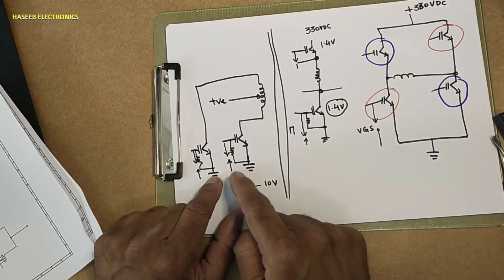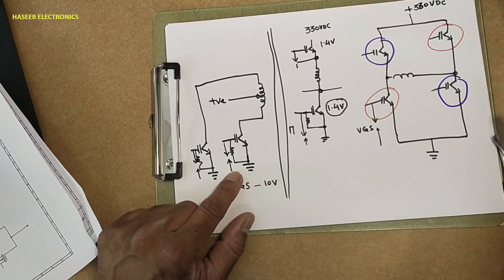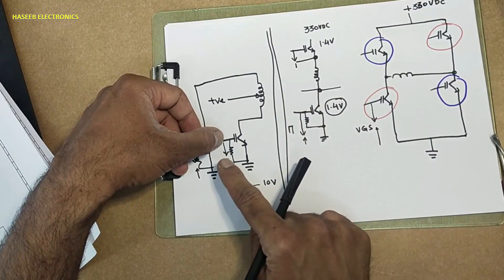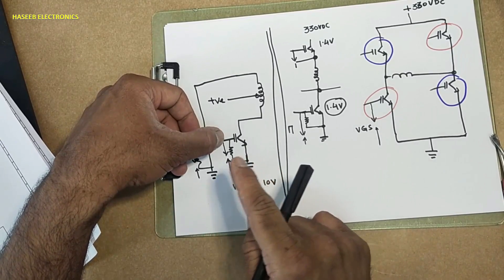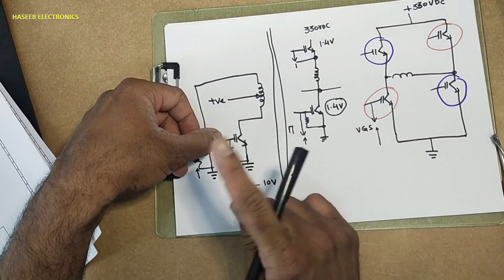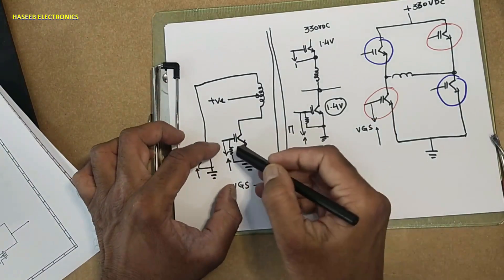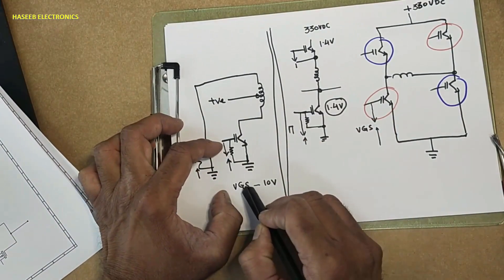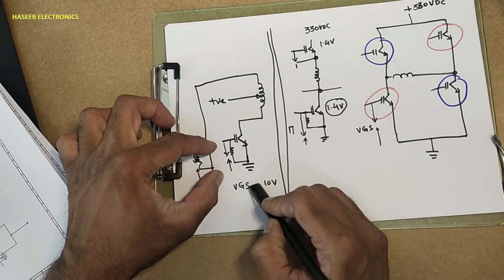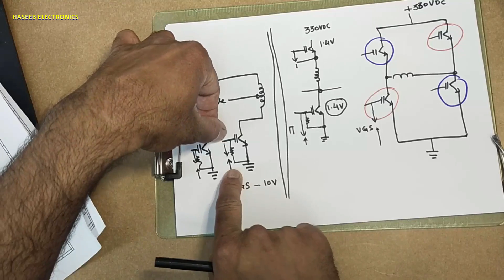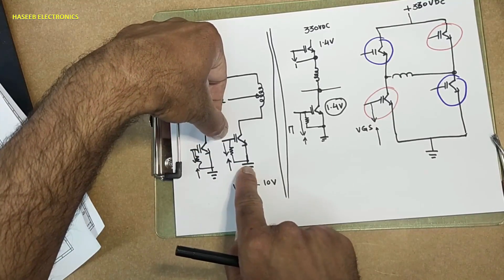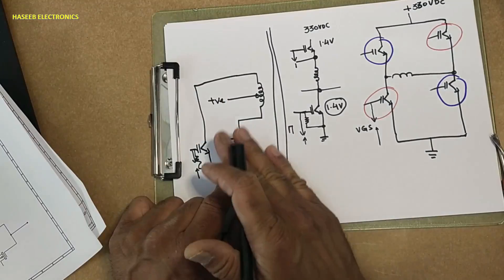To turn on and operate an IGBT or MOSFET, we need gate-to-source voltage in the case of a MOSFET, or gate-to-emitter voltage in the case of an IGBT. That is called VGS voltage. A pulse is applied, and that pulse must be applied between gate and emitter, or between gate and source.